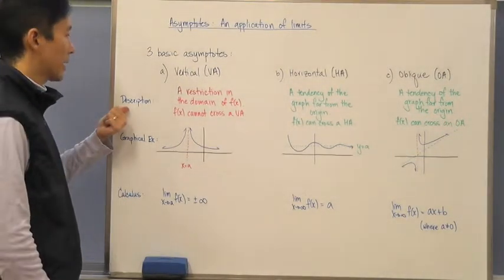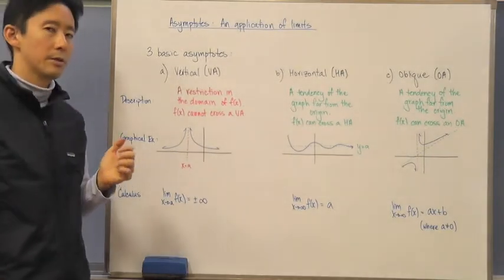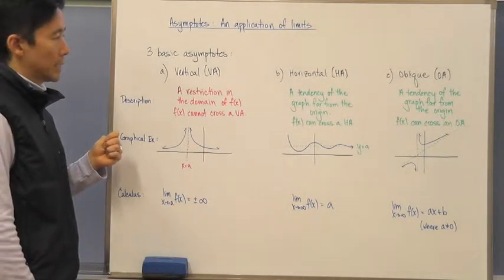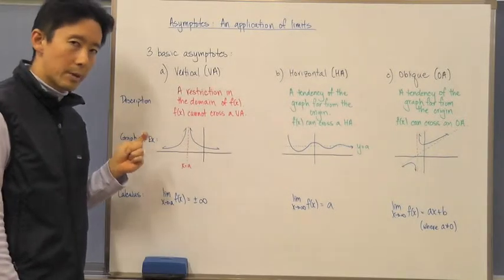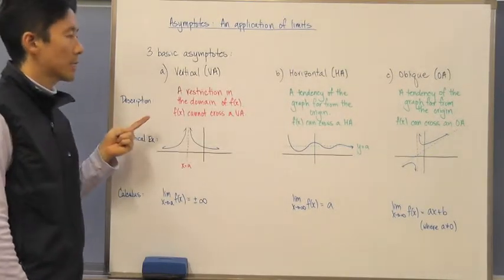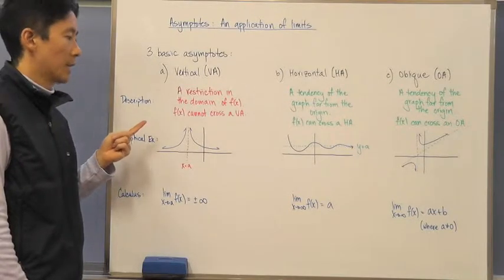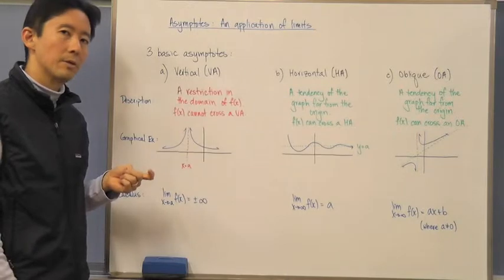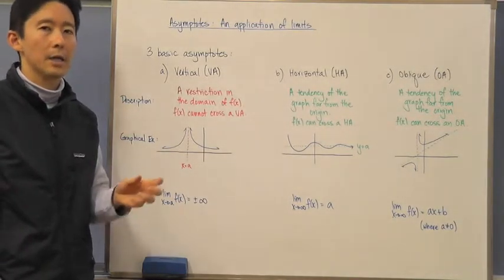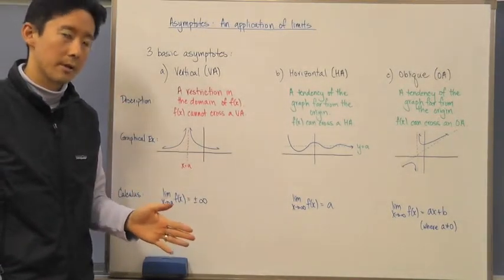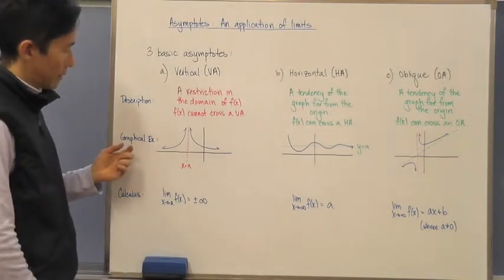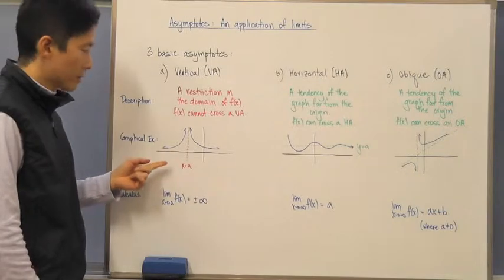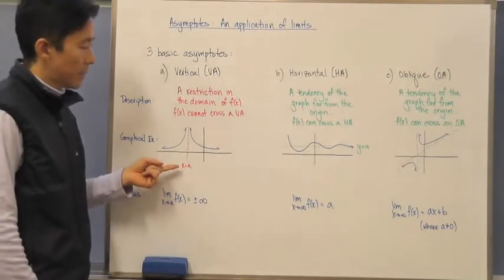Let's describe the vertical asymptote once again just to make sure we're all on the same page. A vertical asymptote is a visual representation of a restriction in the domain of f of x. In other words, f of x cannot cross the vertical asymptote because for that particular value of x, f of x does not exist. Here's what a vertical asymptote looks like graphically.